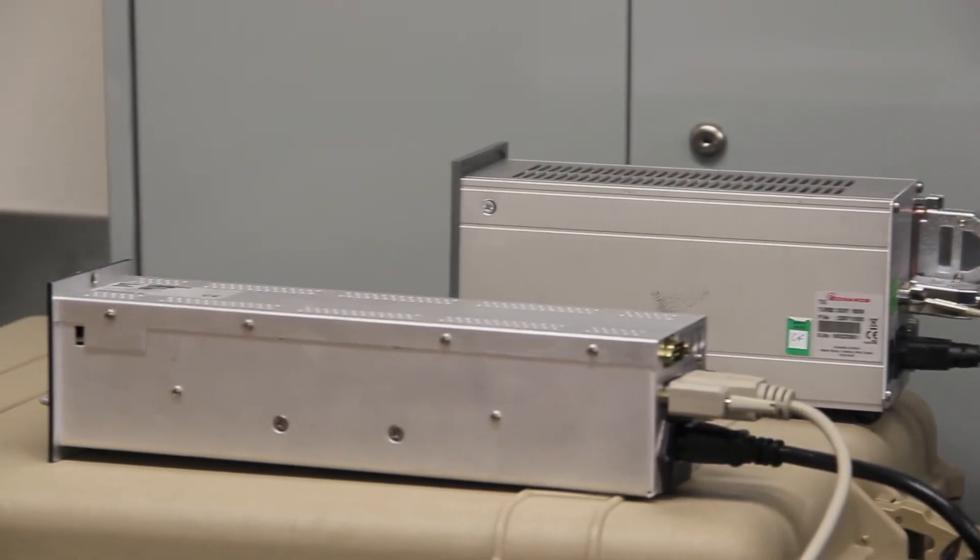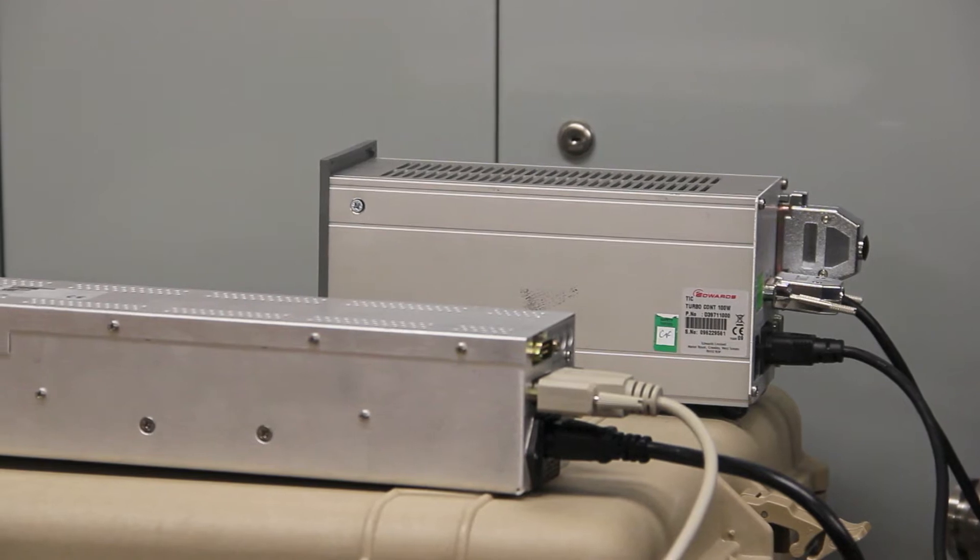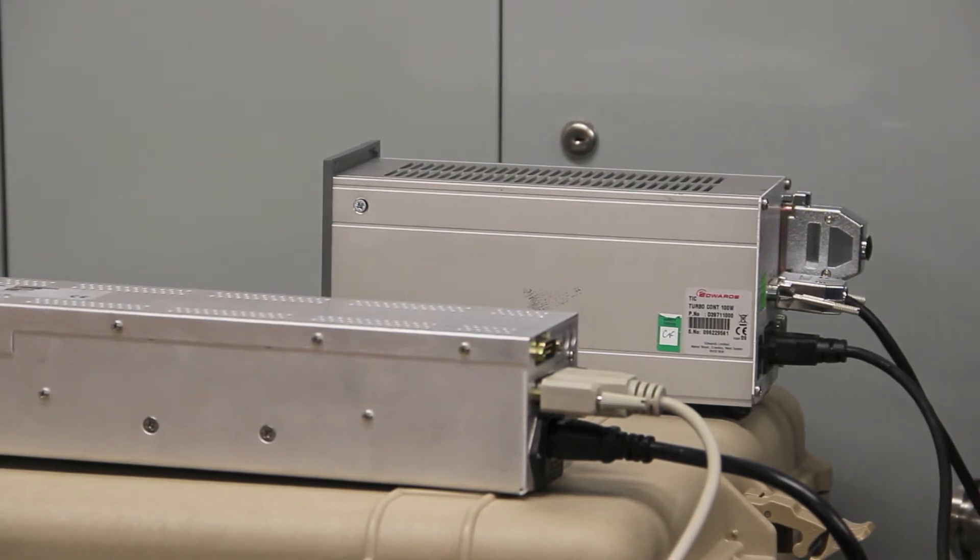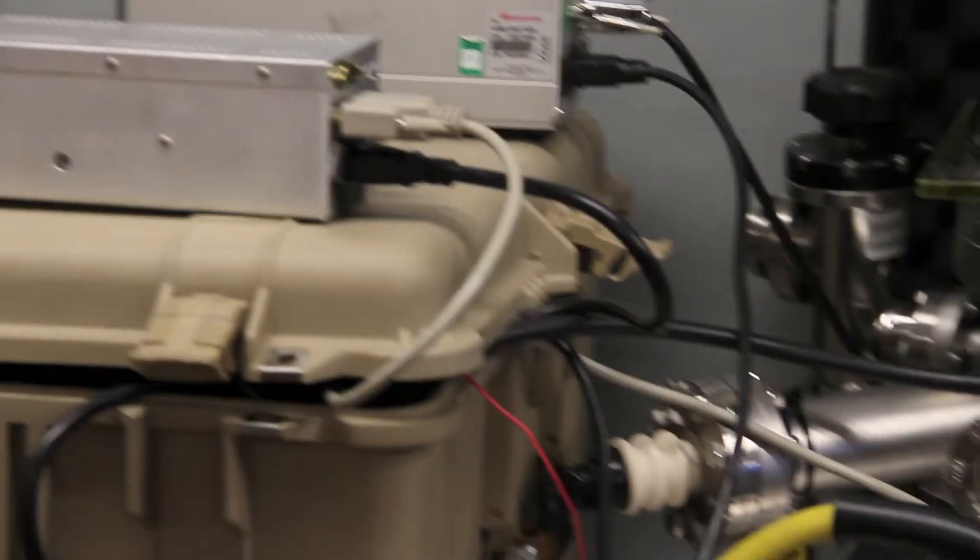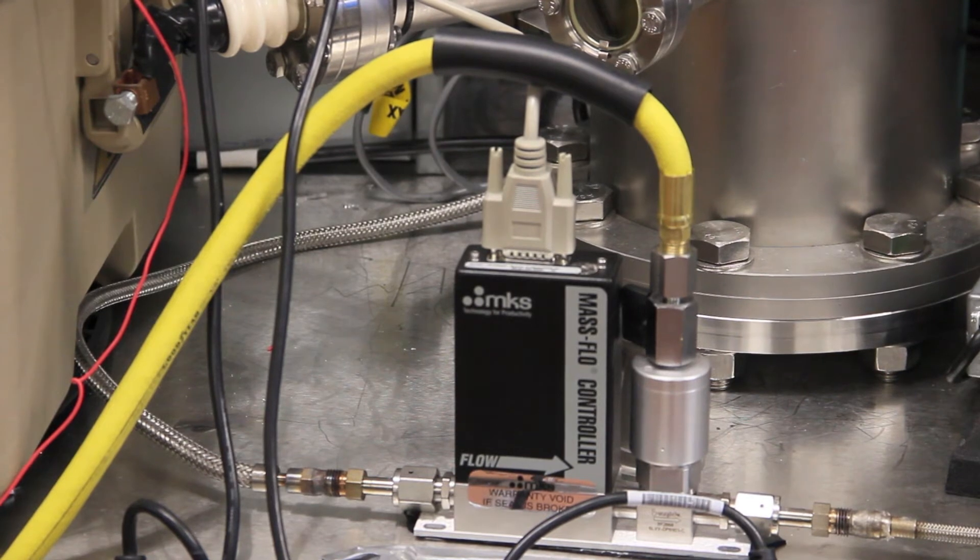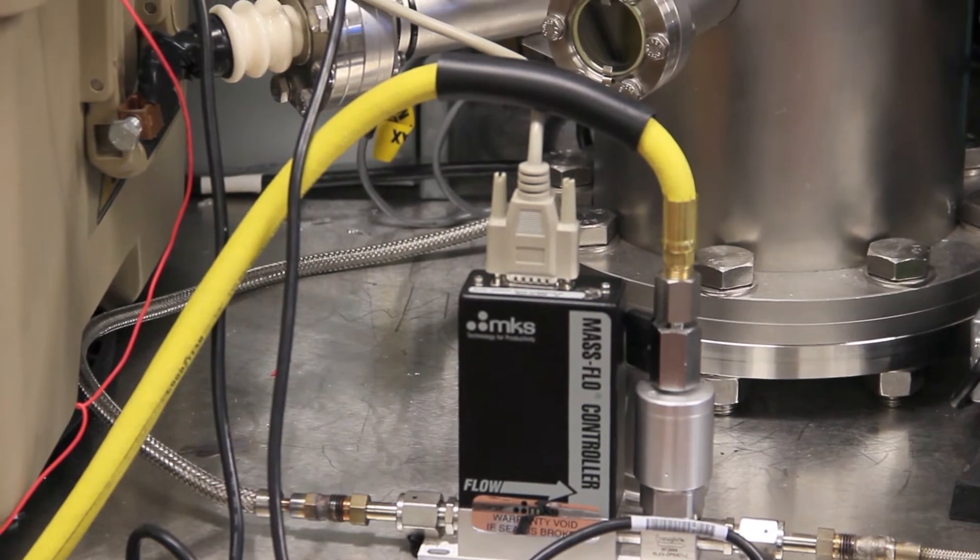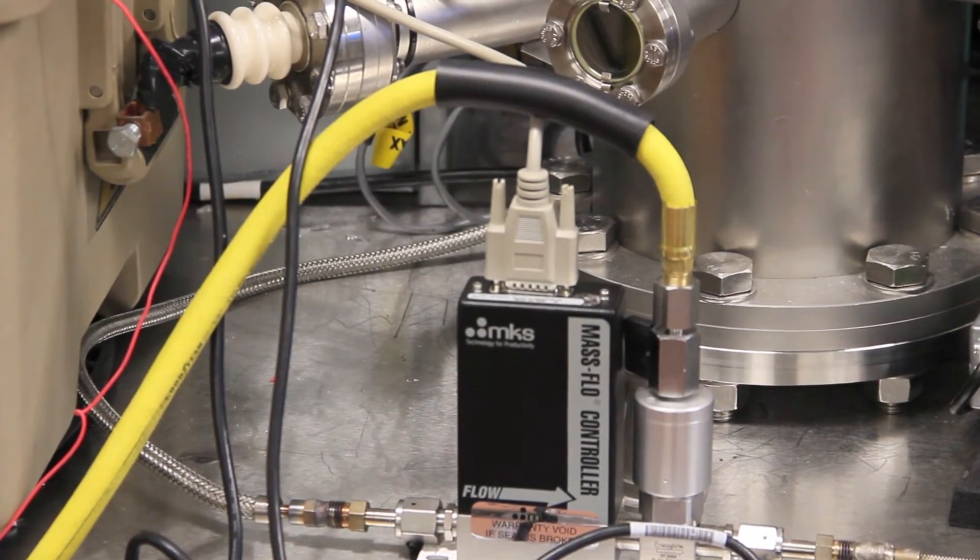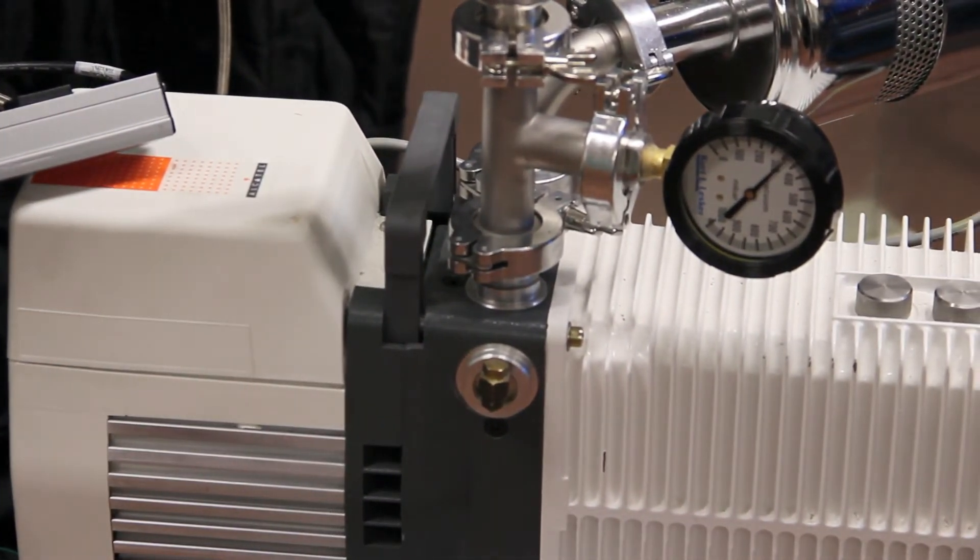Closest to us is the MKS Instruments 246C flow controller. Then right behind that is the Edwards EXT 7DH turbo molecular pump controller. Both are connected through sub D to respective components. That's the MKS mass flow controller 2179A, which has the positive shutoff valve, which is being actuated right now with a DeWalt air compressor. EXT 7DH turbo pump backed by an Alcatel 2021I roughing pump rotary vane.